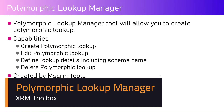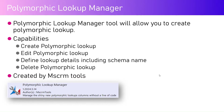In this video I'm going to talk about Polymorphic Lookup Manager, one of the tools available within XRM Toolbox. This tool allows you to create polymorphic lookups — lookups that point to multiple tables. By default in the maker portal, if you want a lookup column pointing to multiple tables, the only out-of-the-box option is the customer data type, which points only to account or contact. If you want a polymorphic lookup pointing to other tables, there is no UI option — you'd need code or the Web API.